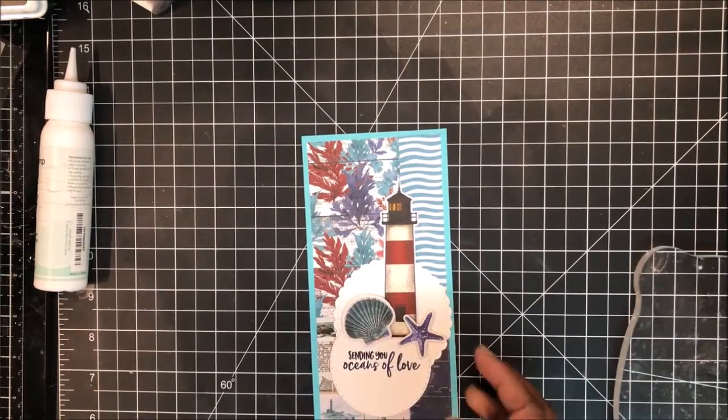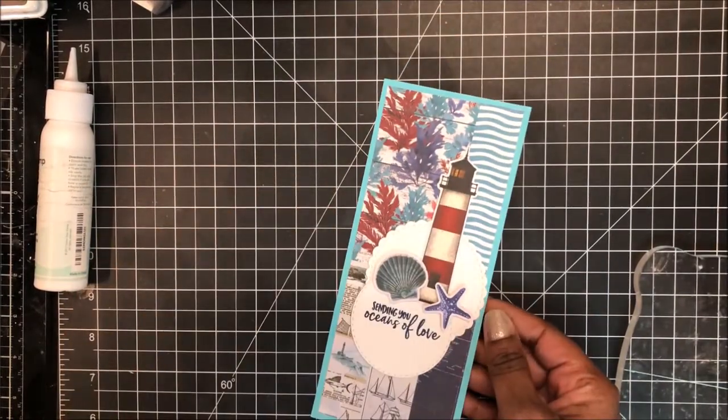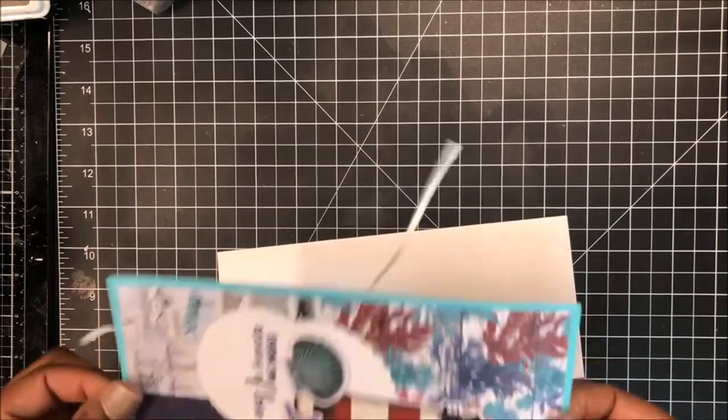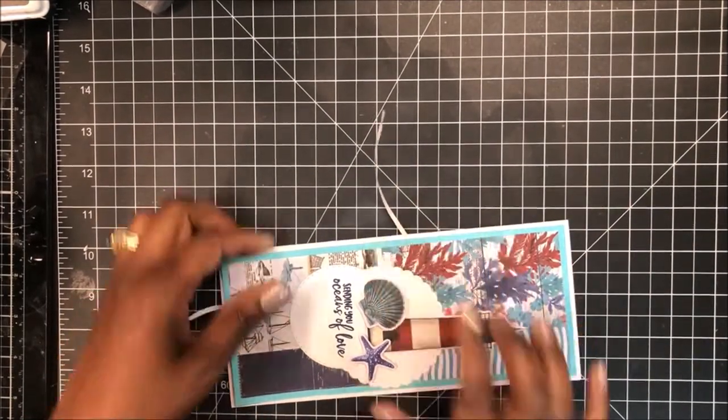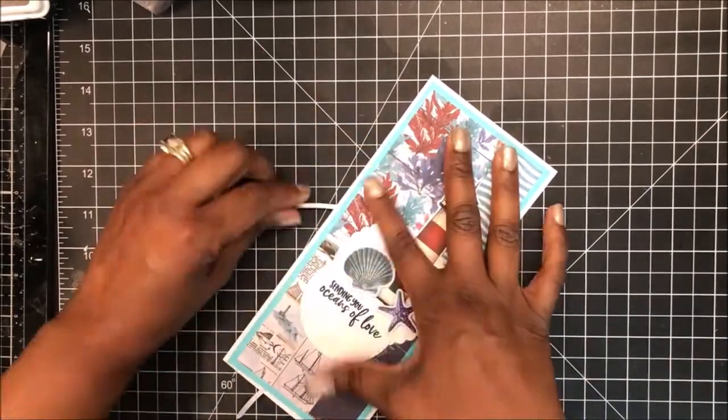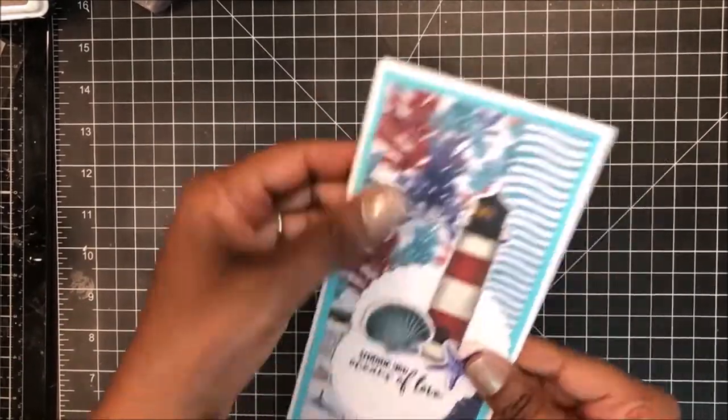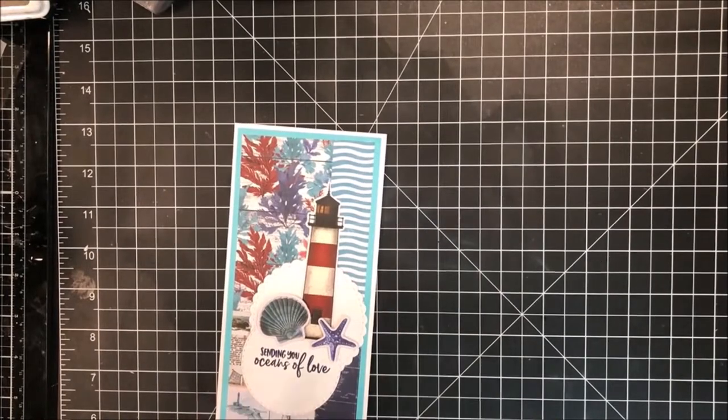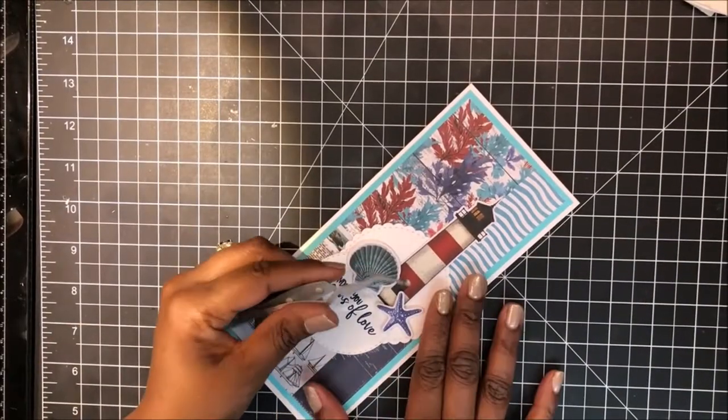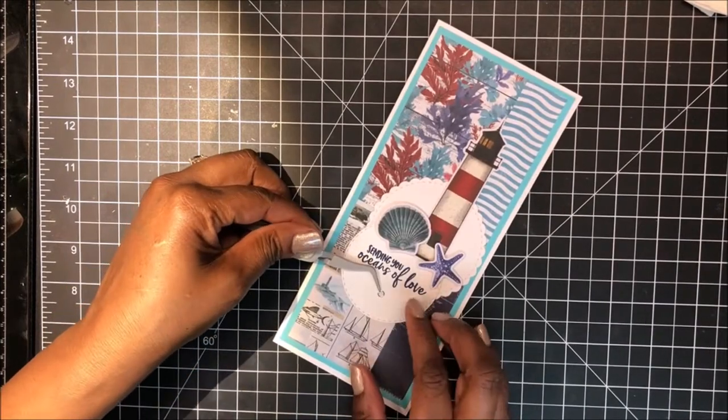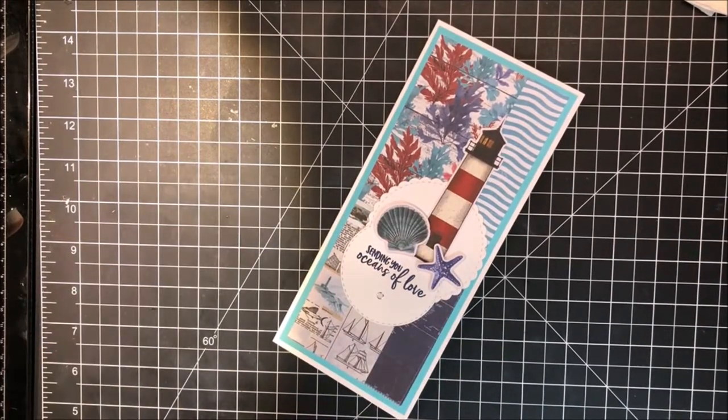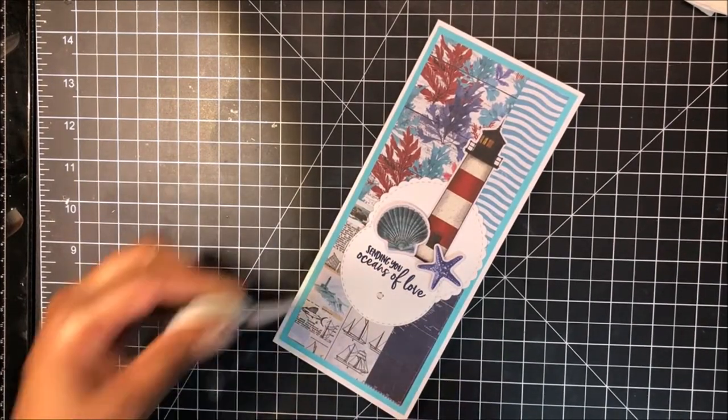And after I get my lighthouse affixed, I will place an acrylic block on top to add pressure so that that liquid adhesive, it fixes very well. Then I'm going to bring in one of the seashells and starfish from the nautical bits. And those are popped up on foam tape. Next, I'm going to place my main panel onto my card base. This is 120 pound accent opaque paper. Love it for card base. It's very heavy. So I placed that focal panel on my card base.